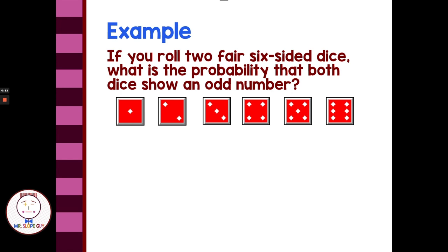The probability of an odd number — we're looking at our successes compared to our total possibilities. A success would be one because it's odd, three because it's odd, and five because it's odd. So there are three possibilities that would be successes out of six different total possibilities. So we have three-sixths, or one half. When we roll a die, it should land on an odd number — one, three, or five — half the time.